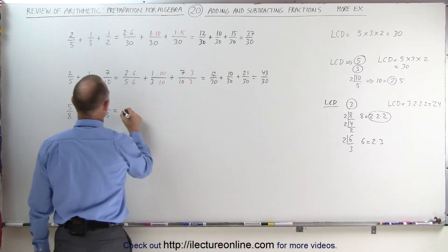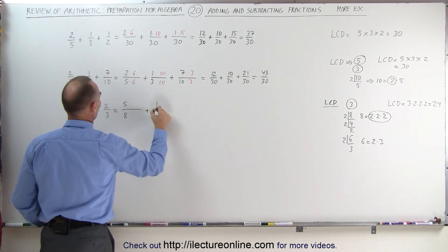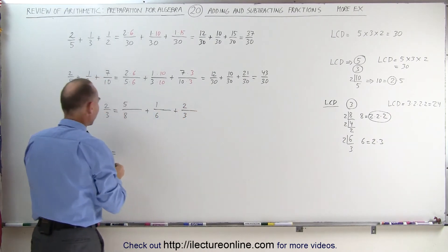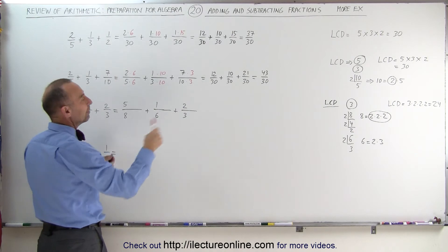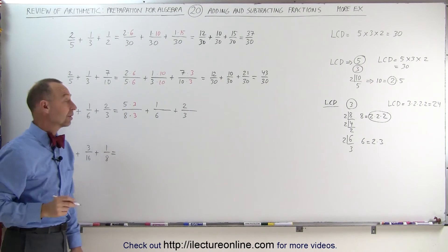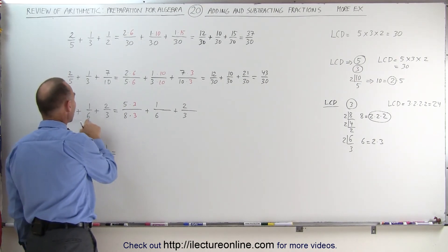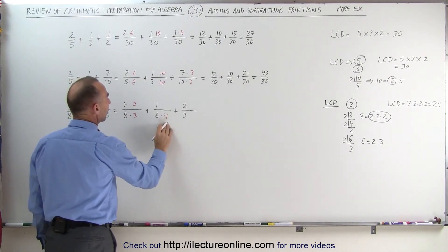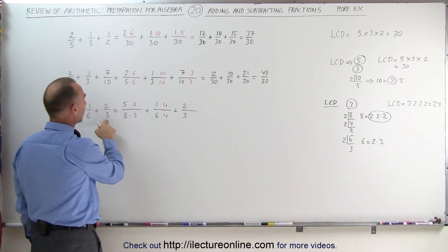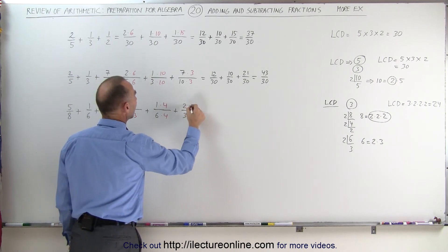Coming over here, we now know that we have 5 eighths plus 1 sixth plus 2 thirds. For the first fraction, to get 24, I have to multiply the denominator times 3, which means I have to multiply the numerator times 3 as well. For the second fraction, to get 6 to be 24, I need to multiply 6 times 4, so I must also multiply the numerator times 4. And the third fraction, I must multiply by 8 to get 24, which means I have to multiply the numerator times 8 as well.